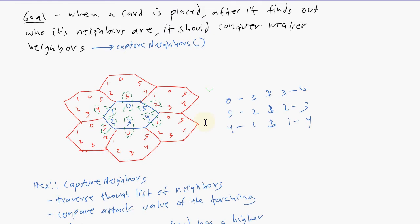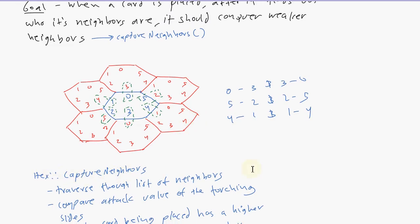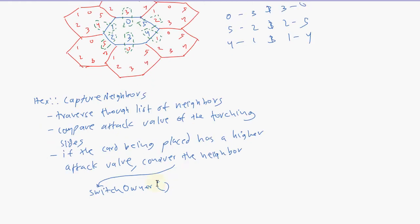This member function called captureNeighbors will traverse through the list of neighbors. Remember that we gave every hex a list of its neighbors. It will compare the attack value of the touching sides. If the hex's attack value is greater, then it will conquer the neighbor. By conquer we mean it will just switch the owner of the neighbor. So we have to give hexes another member function called switchOwner, which will simply switch the owner. That's a pretty easy one to implement.